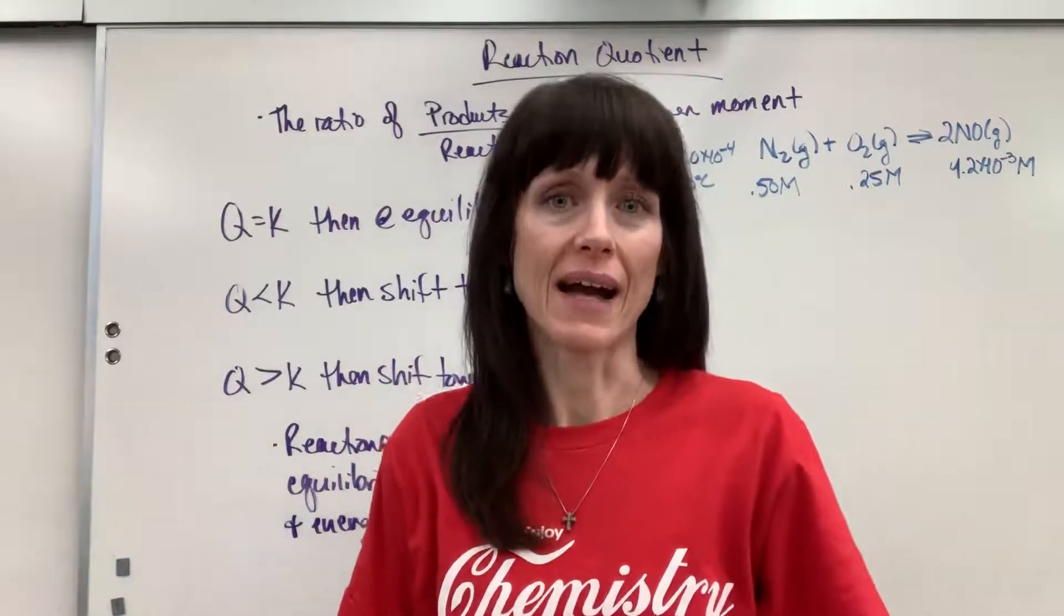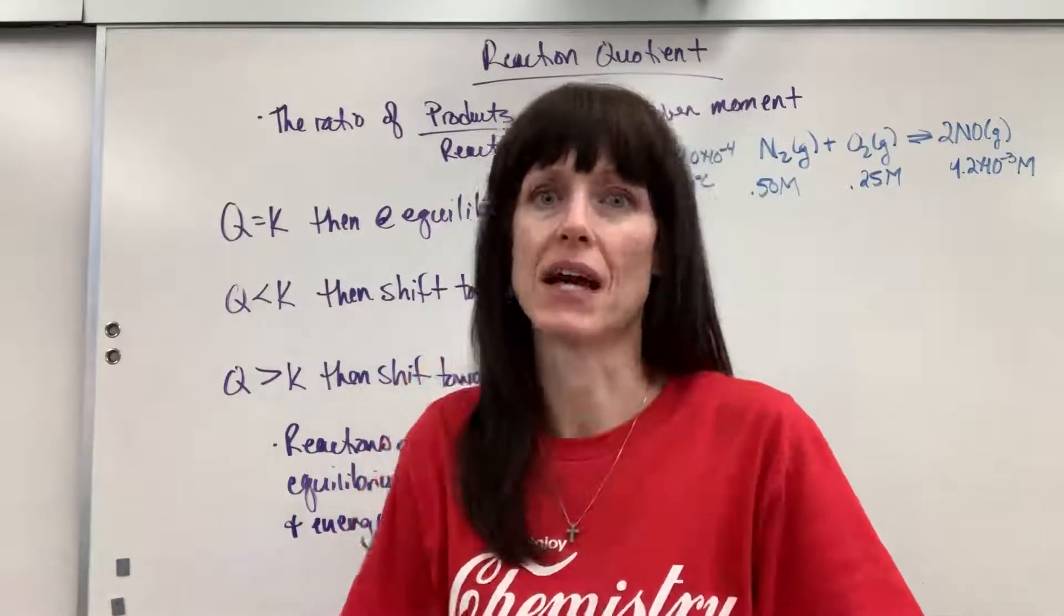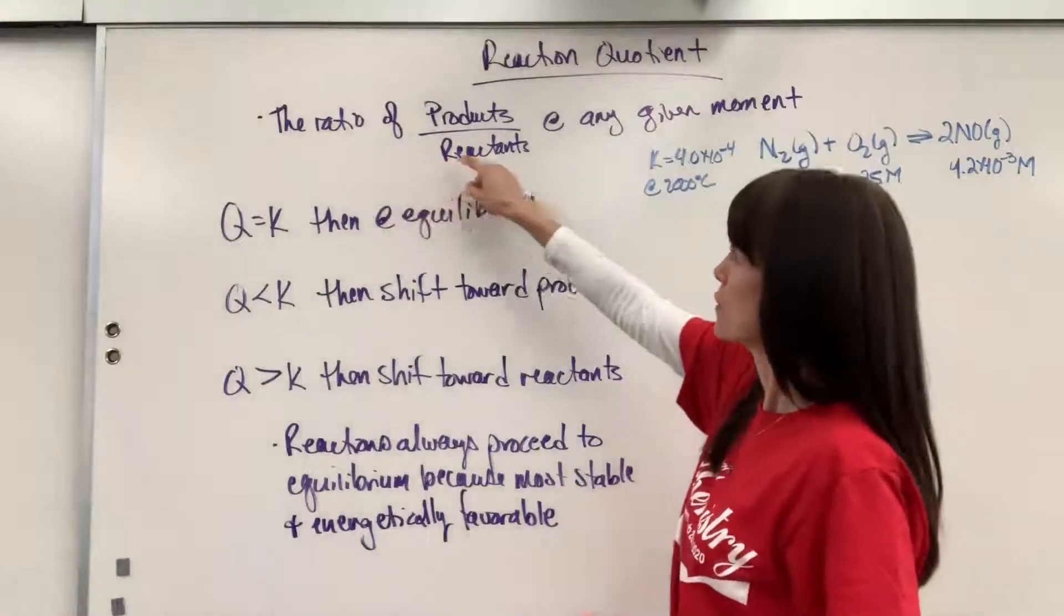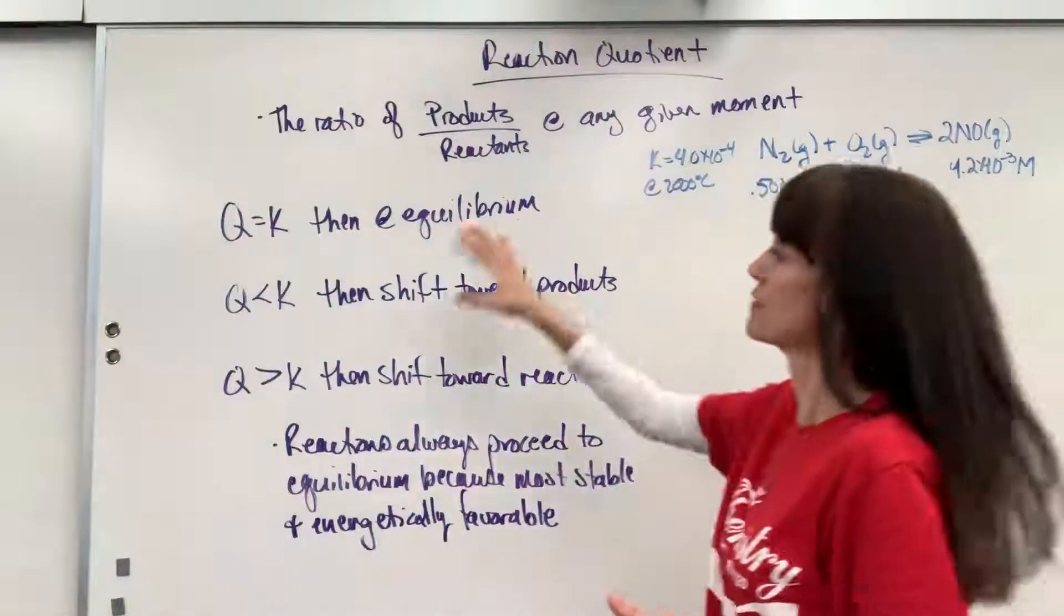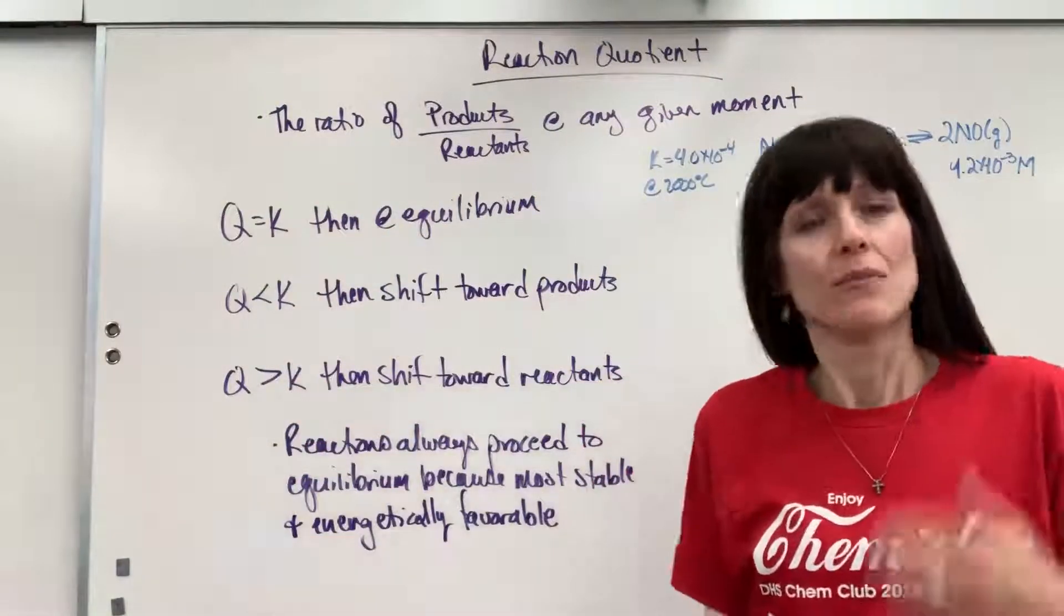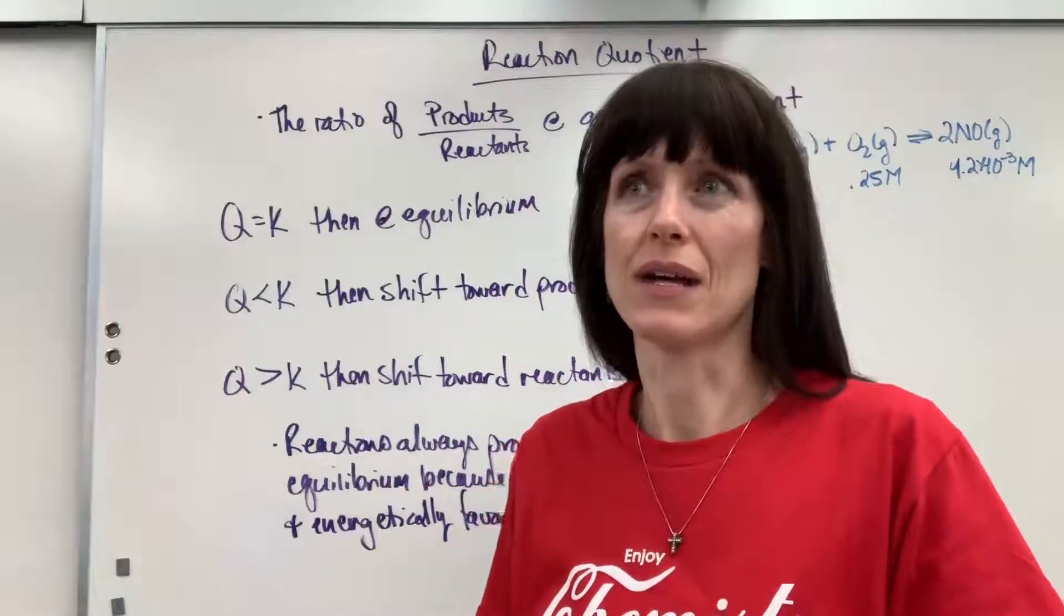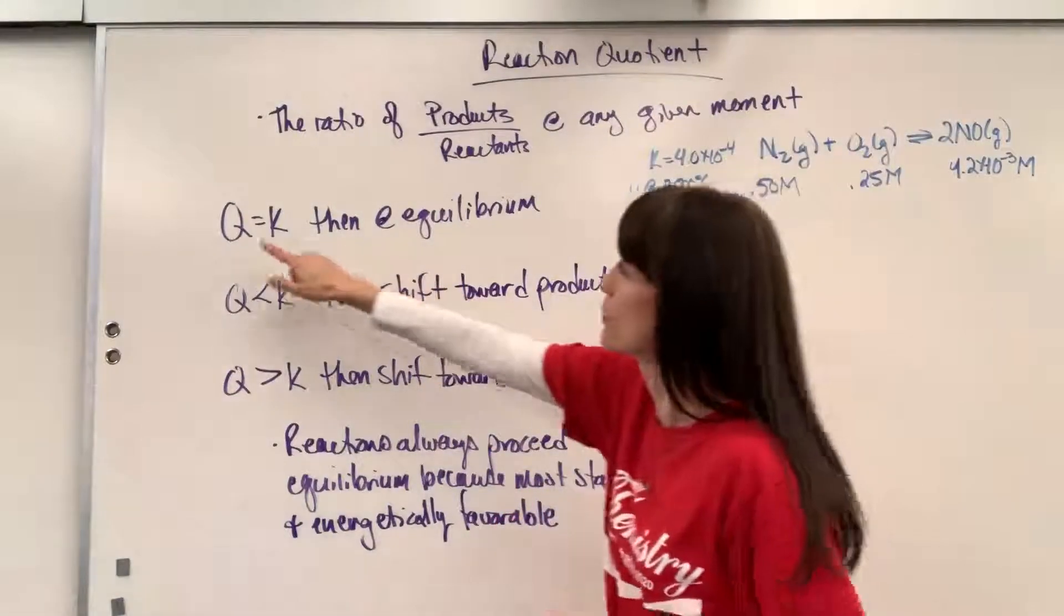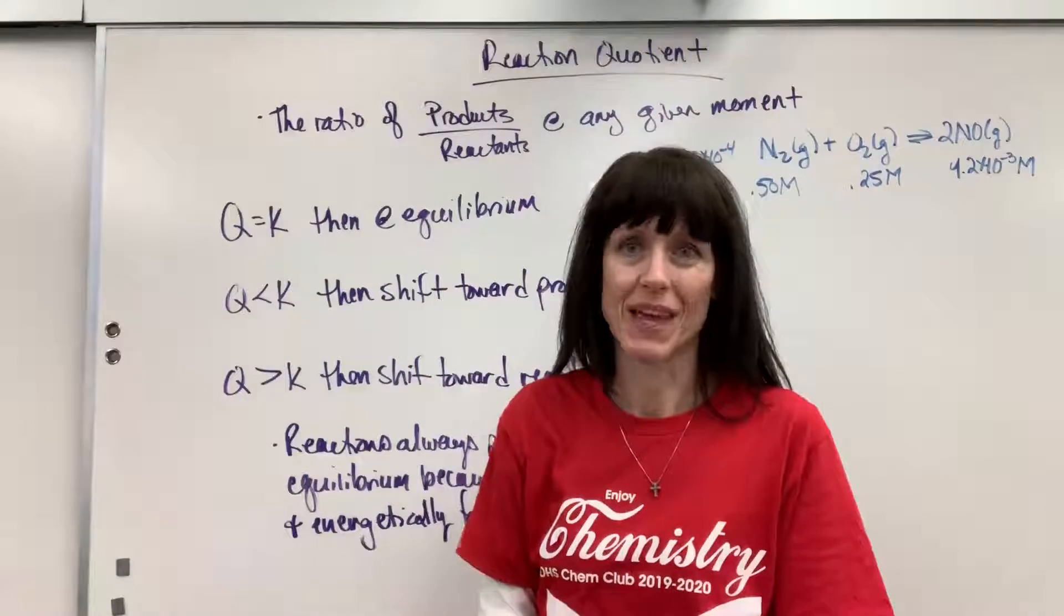So we're not necessarily at K. In fact, usually we're not at equilibrium, K exactly. Notice the definition: the ratio of products to reactants at any given moment. And then I have some qualifiers right here. Now memorize these, but I'm going to have you figure out so that you can have a reason behind the memorization. If Q equals K, that means you're at equilibrium.